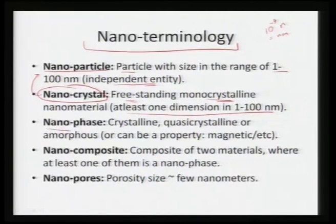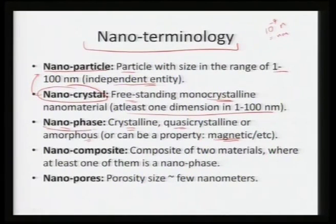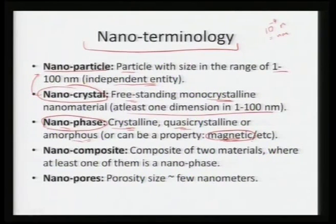When we talk about nanophases, a nanophase can be either crystalline, quasi-crystalline, or amorphous. It is not only about structure — it can also be associated with a property such as a magnetic domain. So we can associate a phase with not only a structure like crystalline, quasi-crystalline, or amorphous, but also a property such as magnetic or electric domains which can exist in a material.